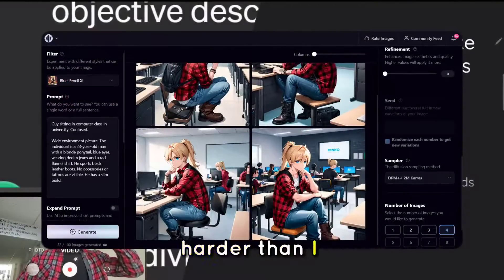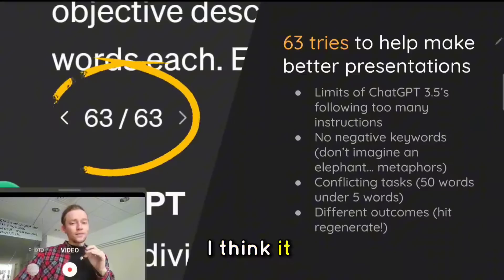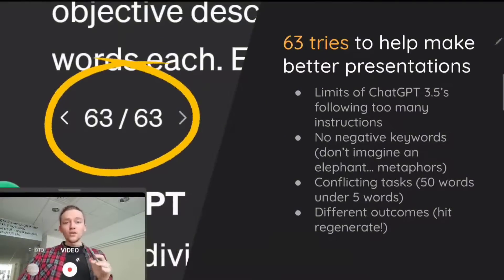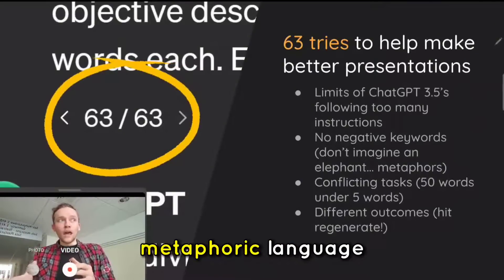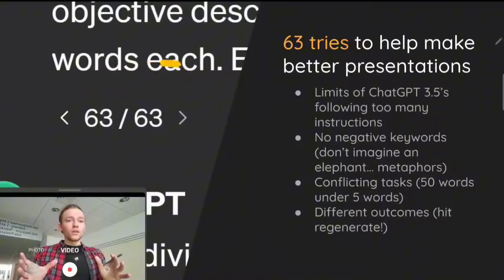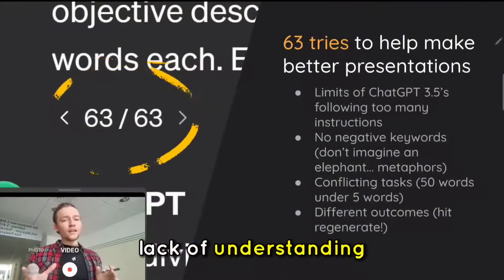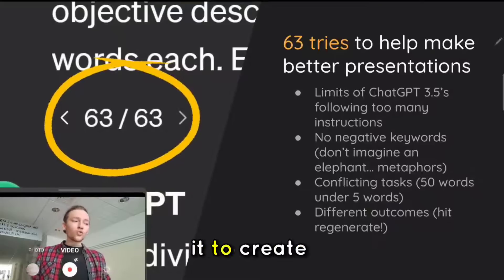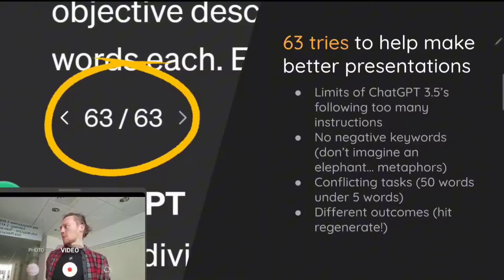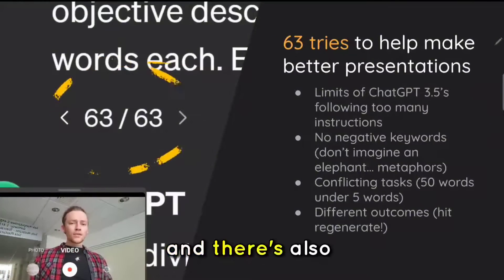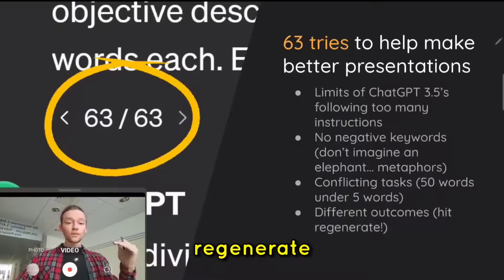This was, however, harder than I thought. The limits of ChatGPT-3.5 are much worse than they used to be. It can't really follow that many instructions. You can't really put negative keywords in — if you tell it not to imagine an elephant, it does. If you tell it not to use metaphoric language like a description of a book, it will of course use metaphoric language. It also has trouble with conflicting tasks — if you tell it to create a description under 50 words with each sentence under five words, it just doesn't know what to do. And there is also the problem that it sometimes creates a different outcome.